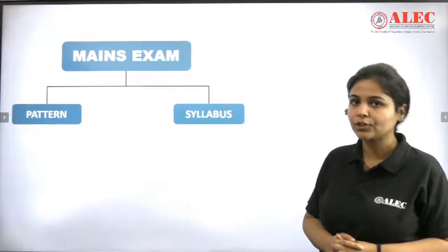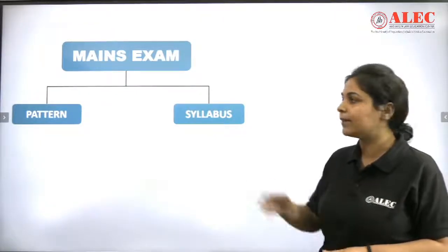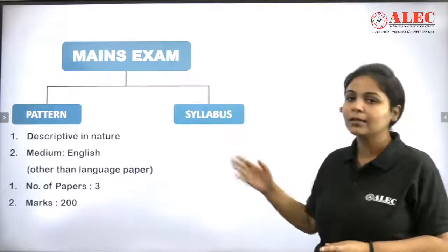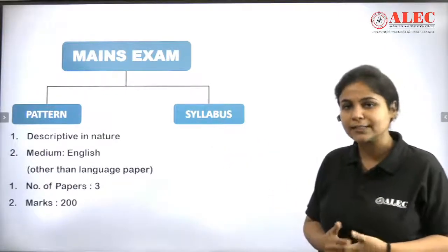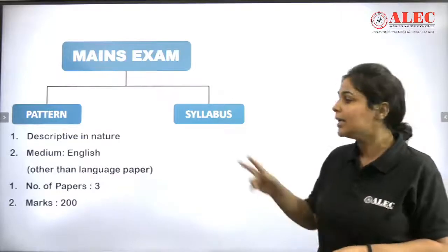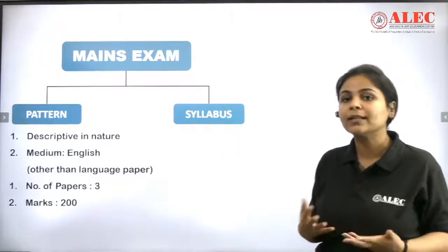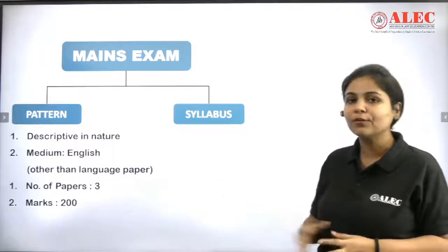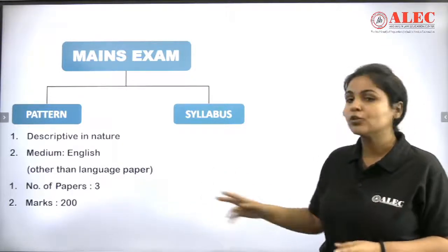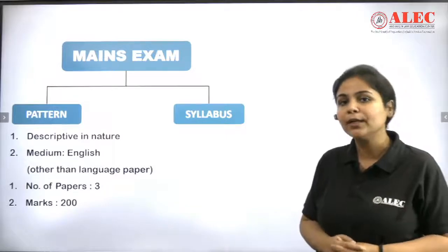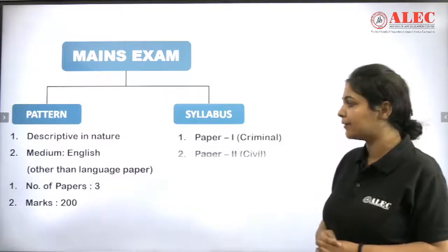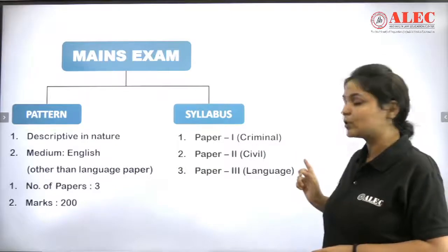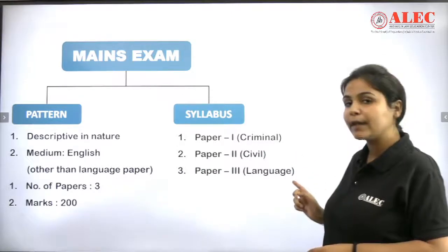Now let's go to the next round: the Mains Examination. I have divided this into two parts — Pattern and Syllabus. The pattern in mains is usually descriptive in nature. The medium is English, other than the language paper. The total number of papers is 3, and the total marks across the three papers are 200. The division is: Paper 1 is criminal law, Paper 2 is civil law, and Paper 3 is language.